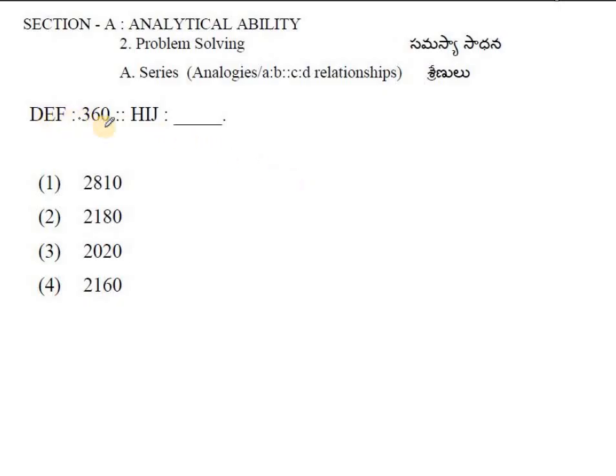The first question is DEF is proportional to 360, then HIJ is proportional to what term? We need to find the relationship between DEF and 360. After observing the serial numbers in the alphabets, D equals 4, E equals 5.